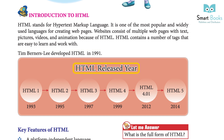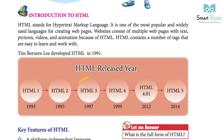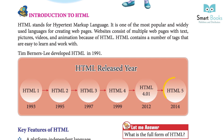HTML Release Year Timeline: HTML 1 – 1993, HTML 2 – 1995, HTML 3 – 1997, HTML 4 – 1999, HTML 4.01 – 2012, HTML 5 – 2014.